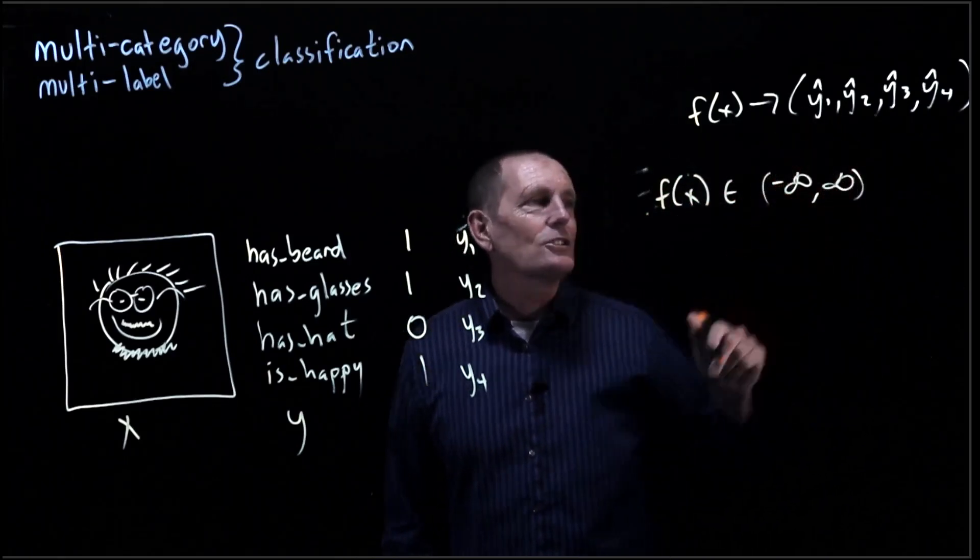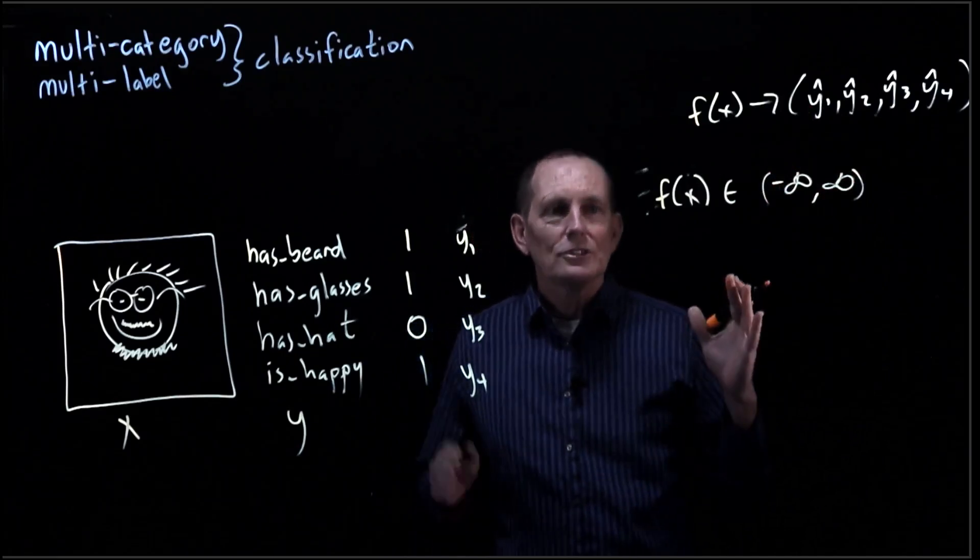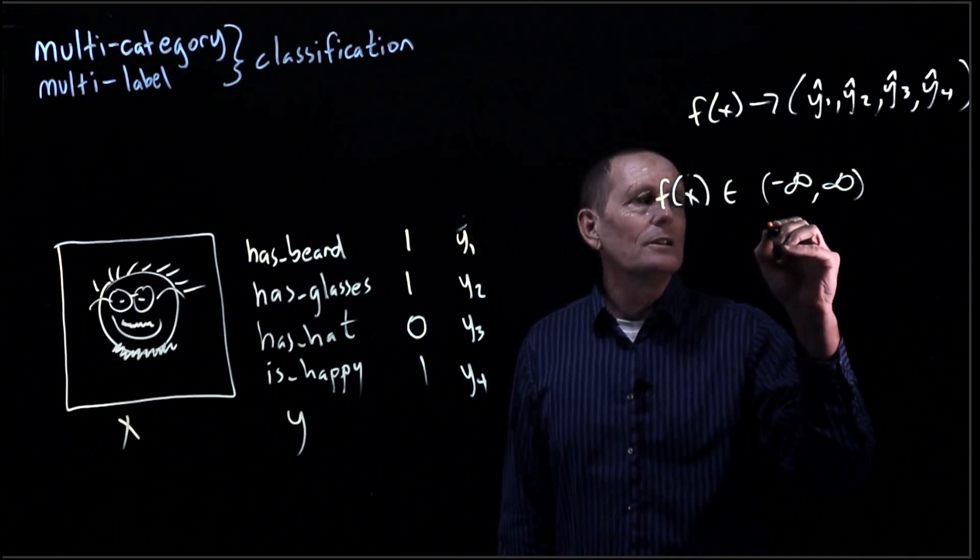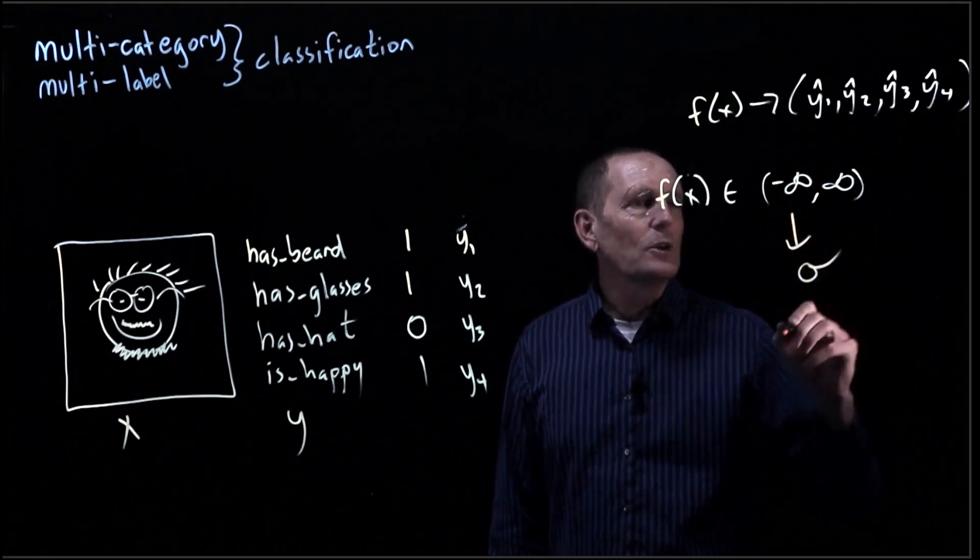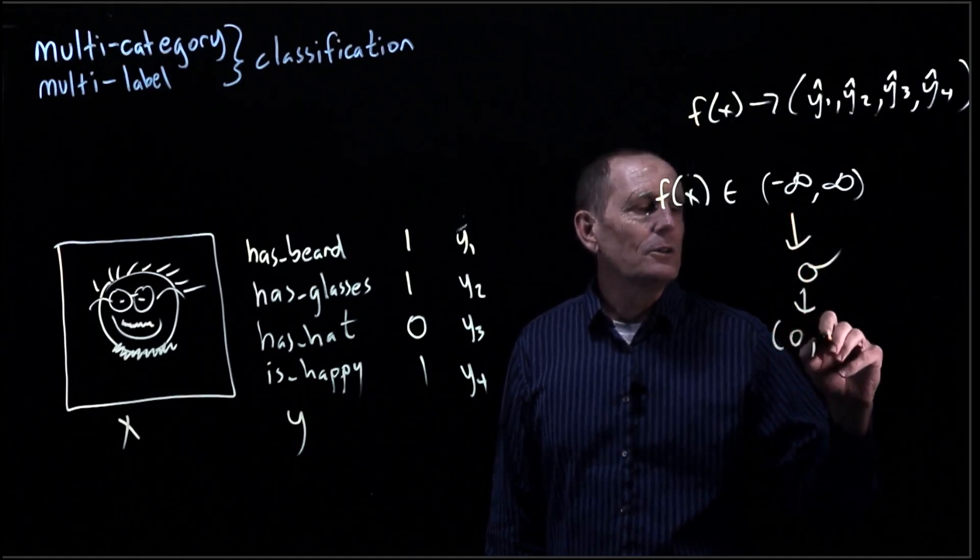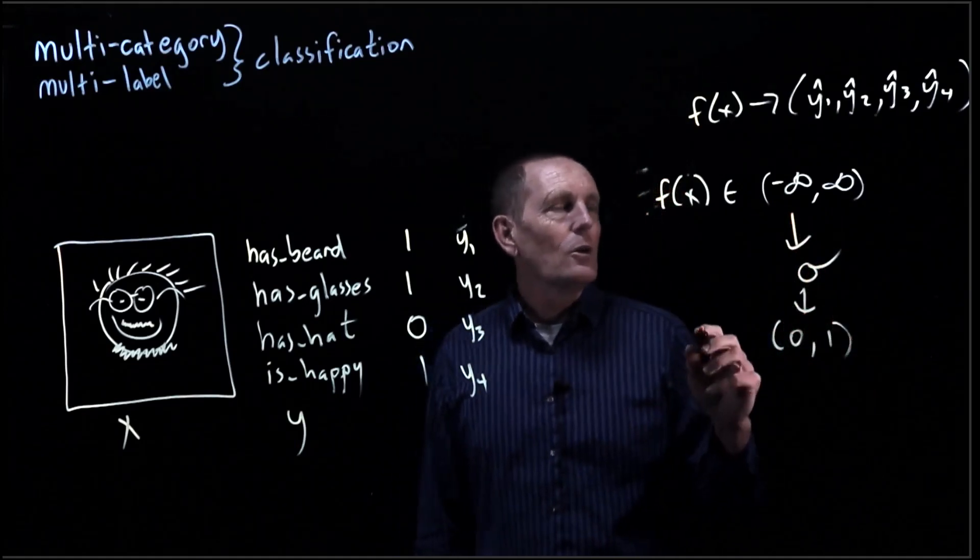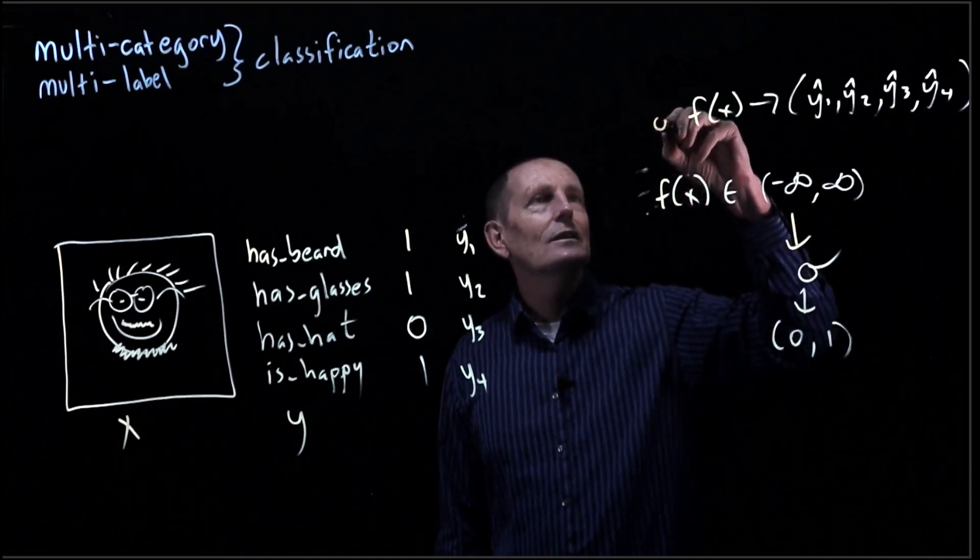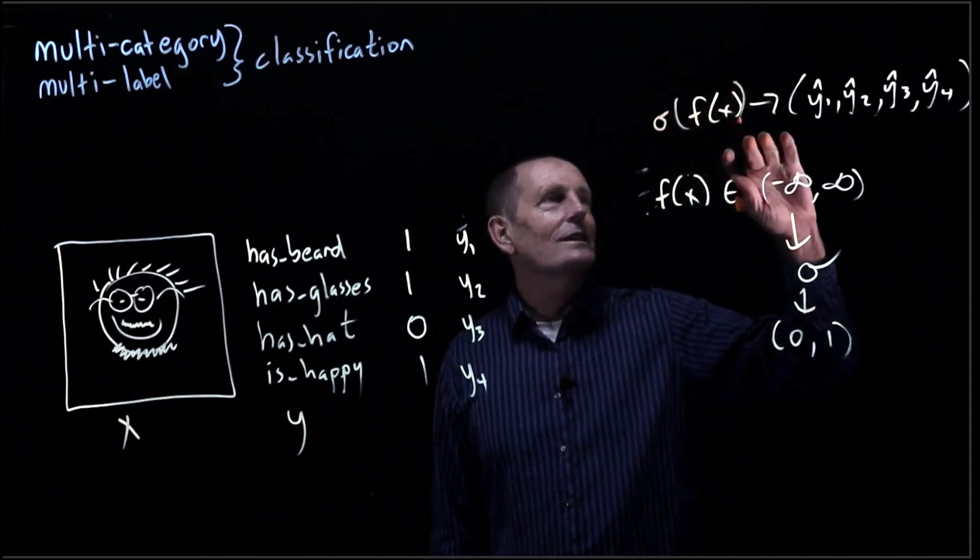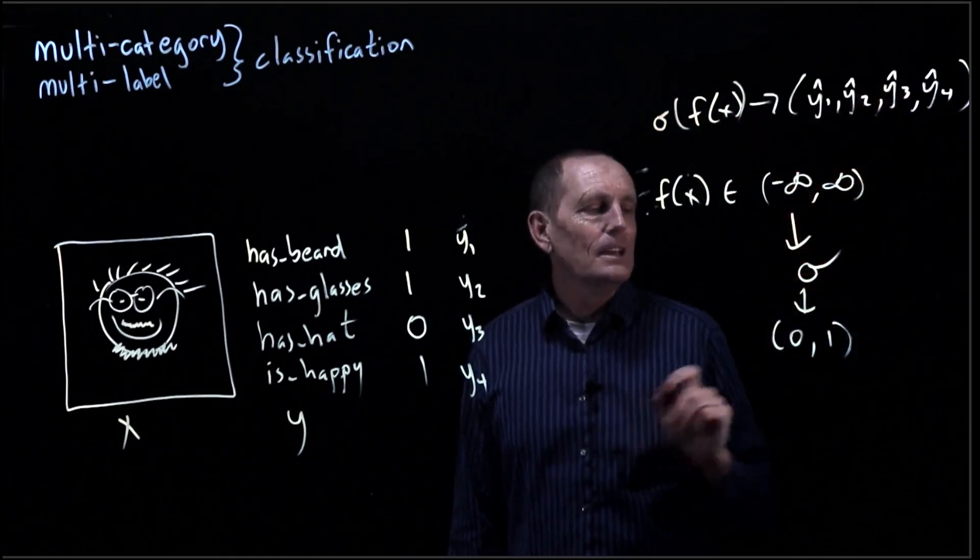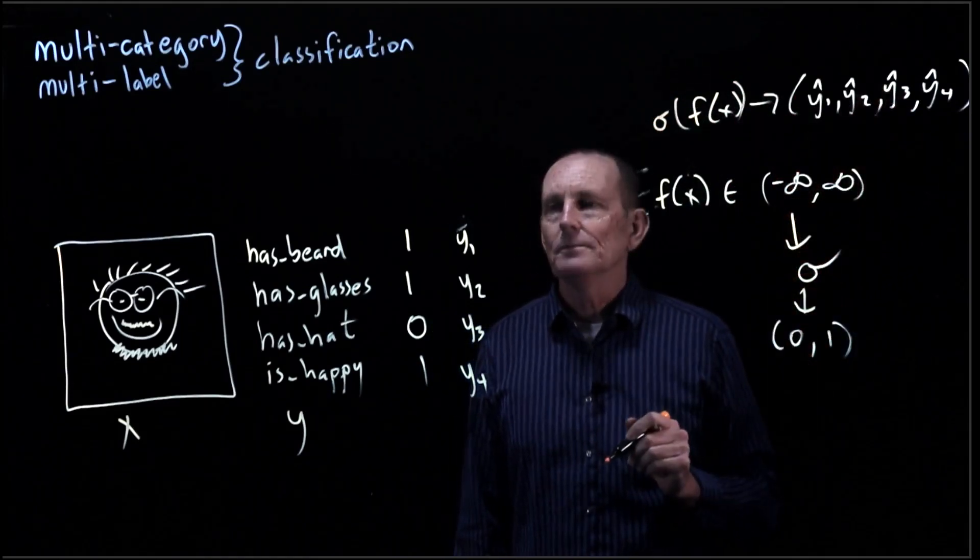But we actually want to squish those down into some value between 0 and 1. So we are going to go ahead and apply the sigmoid function, and that will go down into a range from 0 to 1. So our y hats are actually going to be sigmoid of f of x is going to give us our y hats. So that will give us a range between 0 and 1.